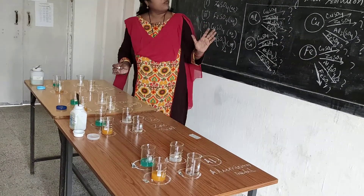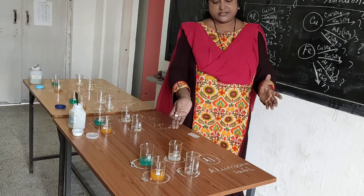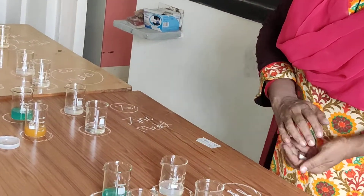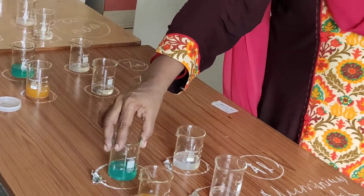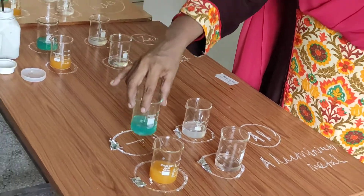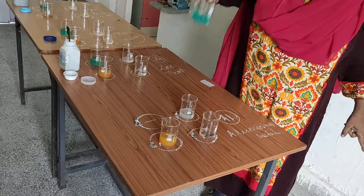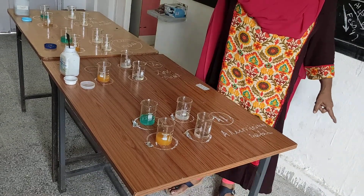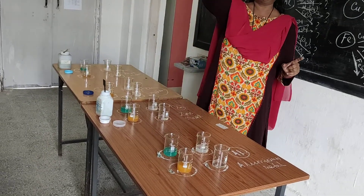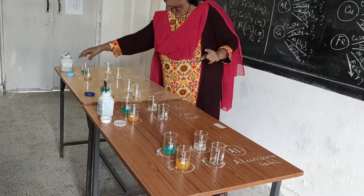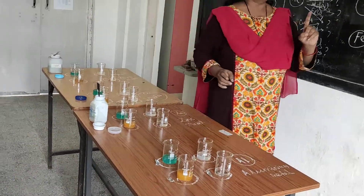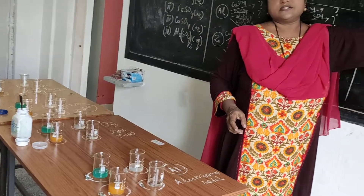I have set up table 1 here. You are seeing 4 beakers arranged here. This is numbered as 1 — beaker 1 is copper sulfate, a blue color liquid you are seeing. Table 2 beaker 1 is also copper sulfate. Table 3 is also copper sulfate. And table 4 is also copper sulfate. Beaker 1 for every table is copper sulfate solution.